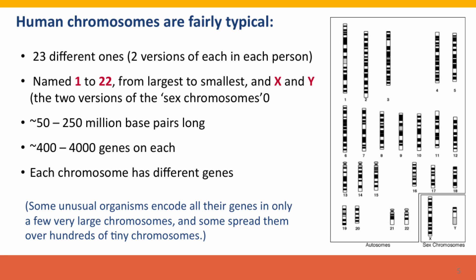Each chromosome — the X chromosome I described was typical — has between 50 and 250 million base pairs of DNA. And in that DNA sequence is the information for between about 400 to 4,000 genes, depending on the chromosome. The longer chromosomes have more genes on average. Each chromosome has different genes — not just different versions, but completely different genes on each chromosome.